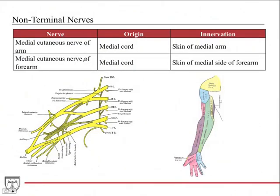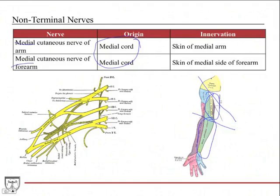There are also the medial cutaneous nerve of the arm and medial cutaneous nerve of the forearm — both come off the medial cord. The medial cutaneous nerve of the arm provides skin sensation to the medial arm, and the other does the medial forearm. Note the anatomical distinction: the arm is the region between the shoulder and the elbow, while the forearm is from the elbow down to the wrist — different from everyday usage where 'arm' refers to the entire extremity.